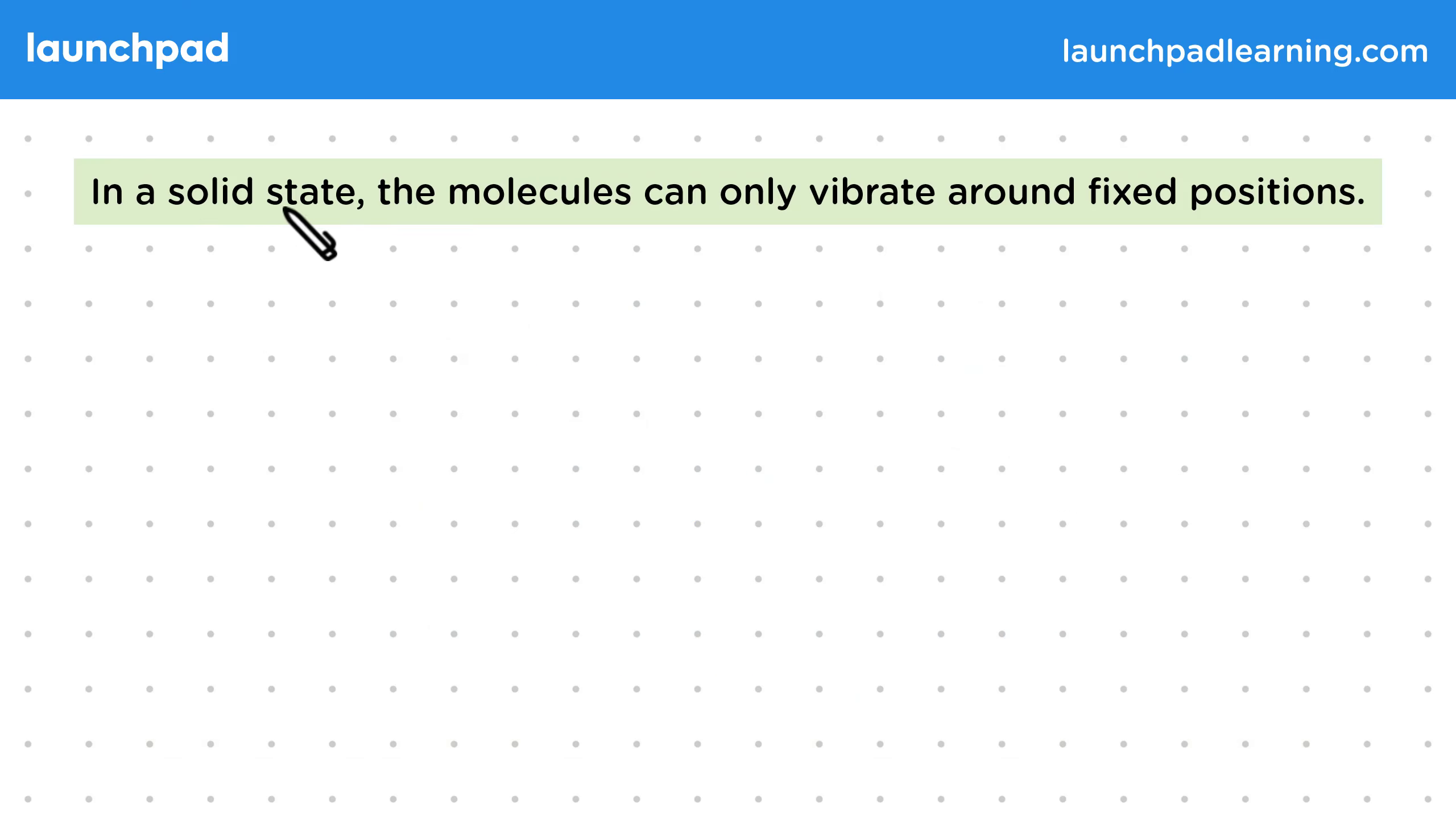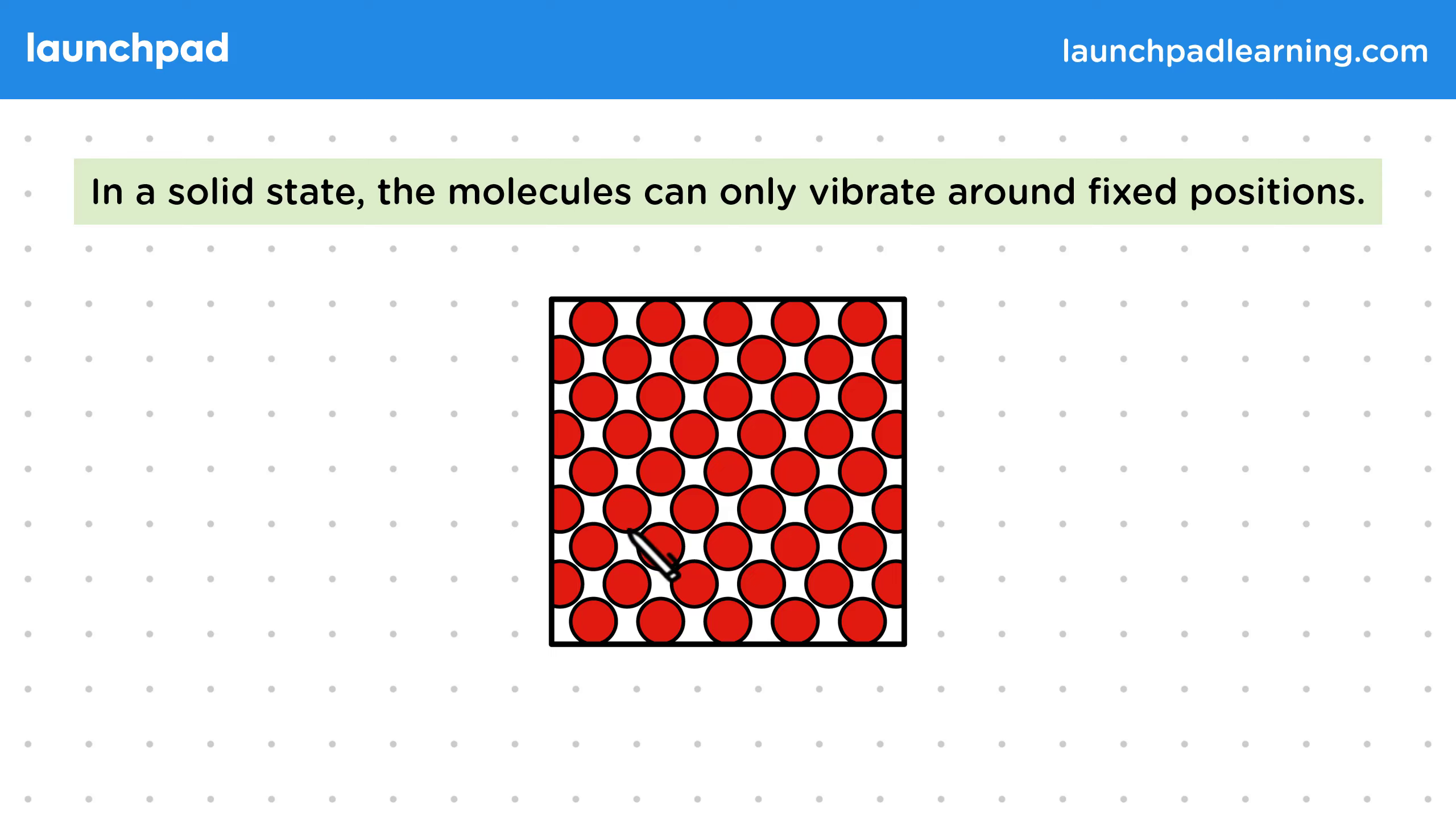First, in a solid state, the molecules can only vibrate around fixed positions. Remember that in a solid structure, the molecules are in a strong rigid structure due to very strong intermolecular bonds.